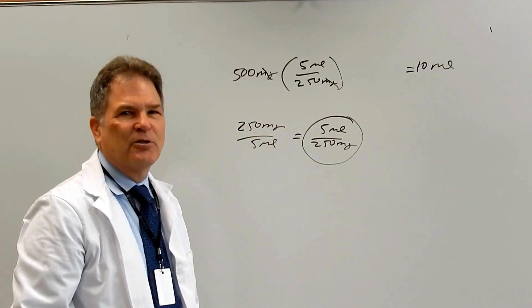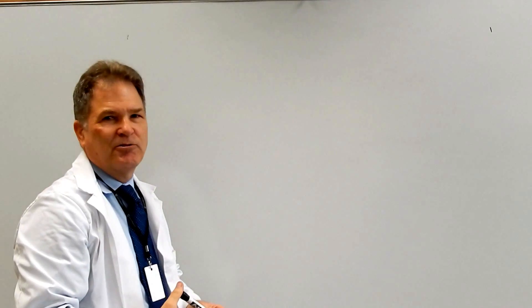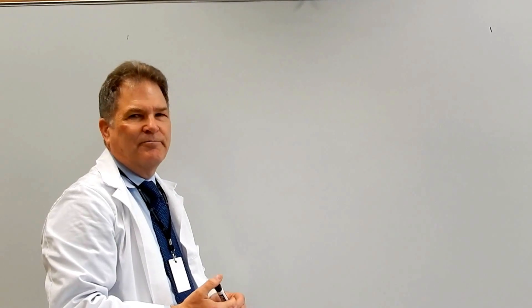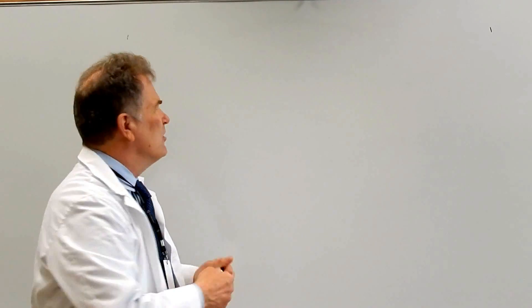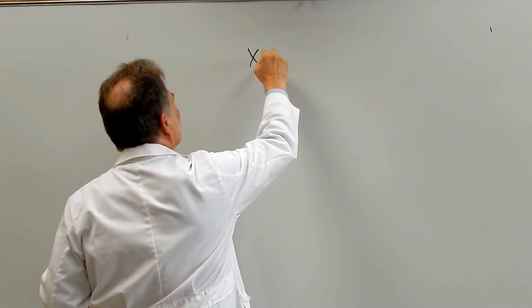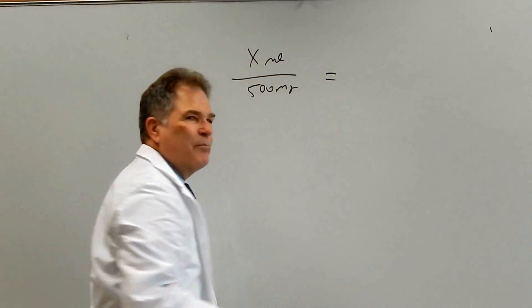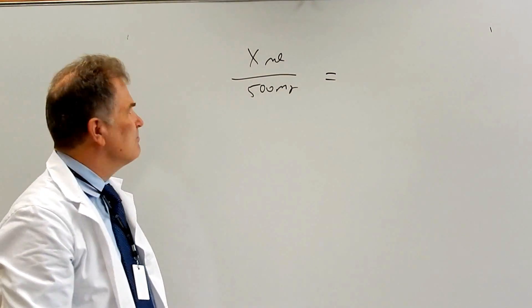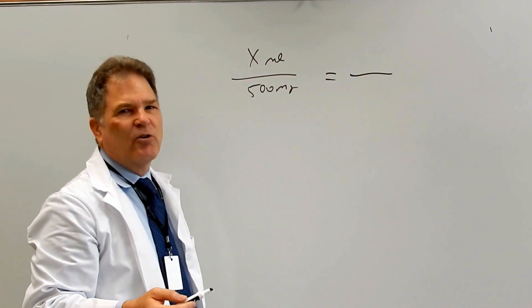Let's do the problem using the ratio proportion method. You basically set up two ratios that are equal — if two ratios are equal, they're proportional. We're going to have a ratio containing the unknown: x mls over 500 milligrams, and compare that to the known ratio of 250 milligrams per 5 mls. When using this method, you have to have the same units all the way around, otherwise it won't work.